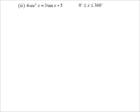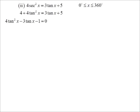Now we saw ones like this before, 4 sec squared x equals 3 tan x plus 5. So we changed the sec squared to 1 plus tan squared, created a quadratic in terms of tan. Unfortunately, this one factorised. So two possibilities. Tan x equals negative a quarter, or tan x equals 1.